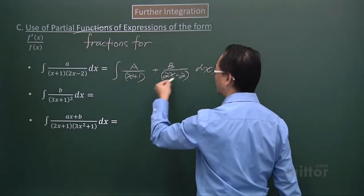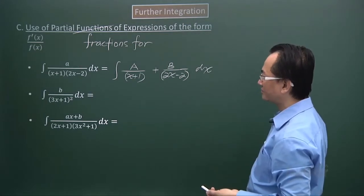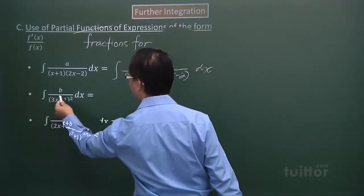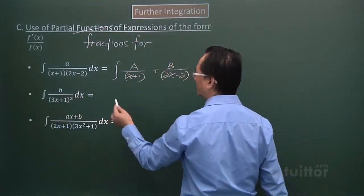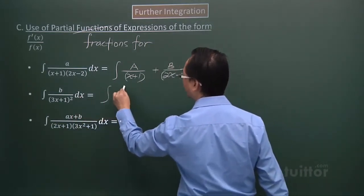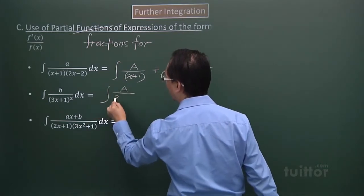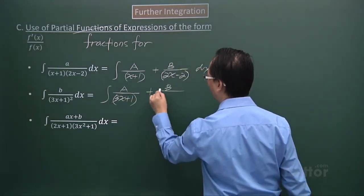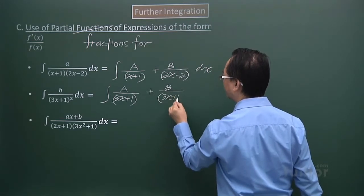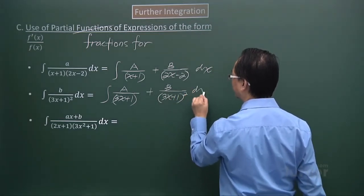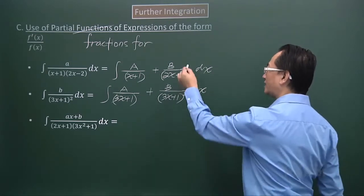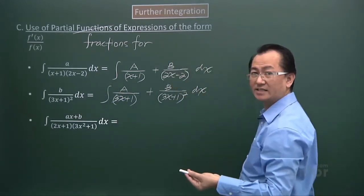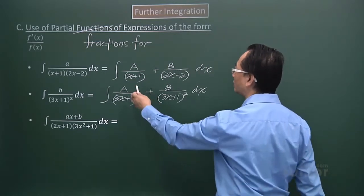As for the other one, I have got repeated linear factors, so in this case, the partial fraction will be A over that linear factor, plus B over the square of that linear factor. So you can see, so far in these two cases, the fractions to be integrated with respect to x have been split up into partial fractions.